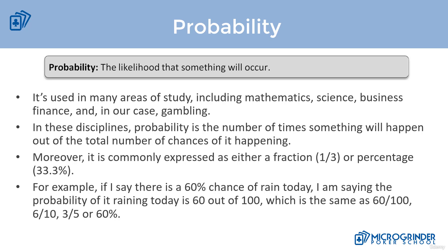When we talk about probability, it's used in many areas of study, and this can include mathematics, sciences — the hard sciences and the soft sciences — business, specific areas of business such as finance, and of course, in our case, gambling. In these disciplines, probability is the number of times something will happen out of the total number of chances that it may happen.